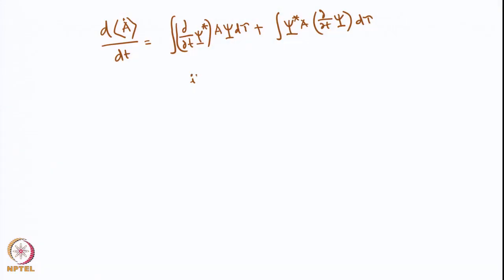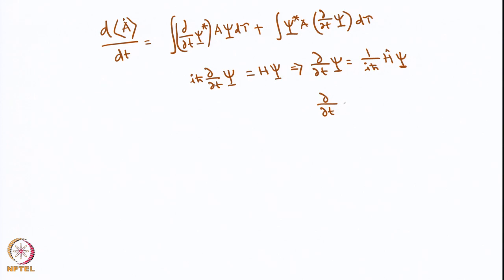Now we are going to invoke the Schrödinger equation. The Schrödinger equation says ih-bar d/dt of psi equals H·psi. This implies d/dt of psi equals (1/ih-bar) H·psi. If we take the complex conjugate of this, then d/dt of psi* equals (i/h-bar) H·psi*, with a negative sign because i becomes minus i.